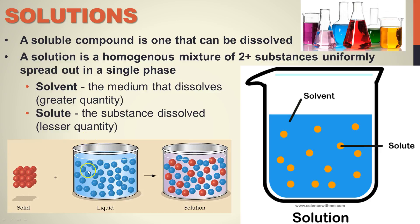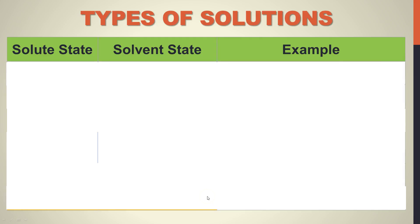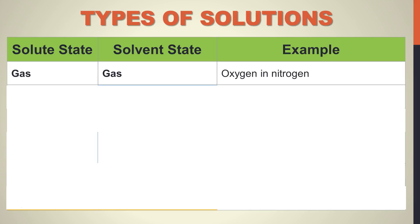Here we can see a solid goes into liquid, evenly distributes — we have a solution. We have different types of solutions. If you take a gas and dissolve it in another gas, an example would be oxygen in nitrogen. Air is 78% nitrogen and 21% oxygen, so we say oxygen is dissolving inside the nitrogen.